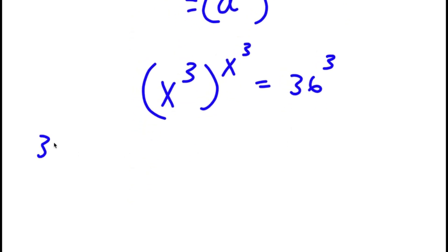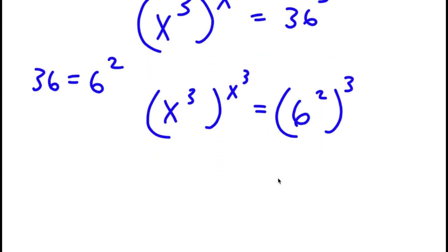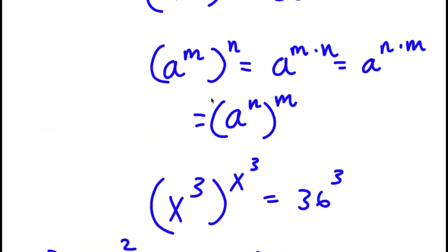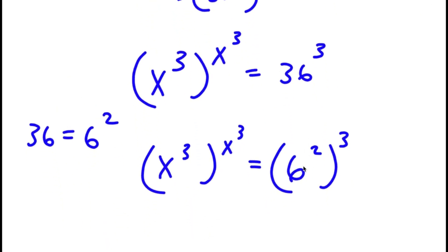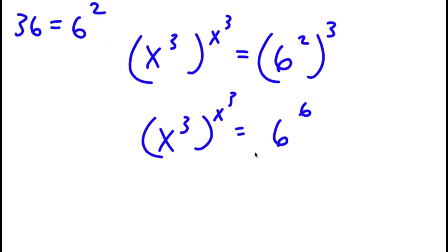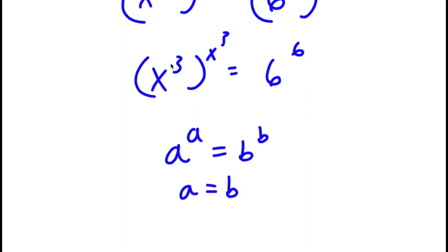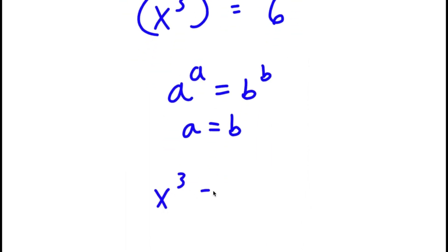Now 36 can be written as 6 to the power of 2. So I have x to the power of 3 to the power of x to the power of 3, equal to 6 to the power of 2 to the power of 3. Applying the power rule, 6 to the power of 2 to the power of 3 equals 6 to the power of 6. Since a to the power of a equals b to the power of b means a equals b, x to the power of 3 equals 6.